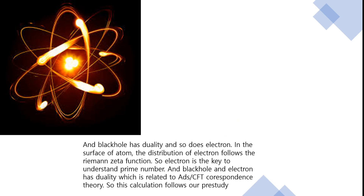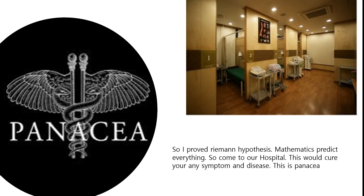Black hole has duality, and so does the electron. In the surface of an atom, the distribution of electrons follows the Riemann Zeta function. So the electron is the key to understanding prime numbers, and black hole and electron have a duality which is related to ADS-CFT correspondence theory. So this calculation follows our previous study. So I proved the Riemann hypothesis.